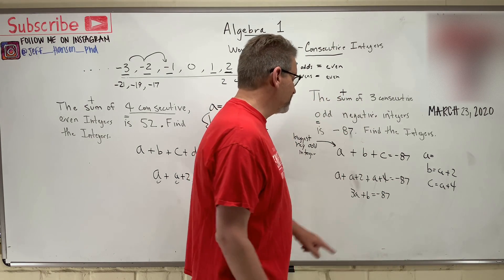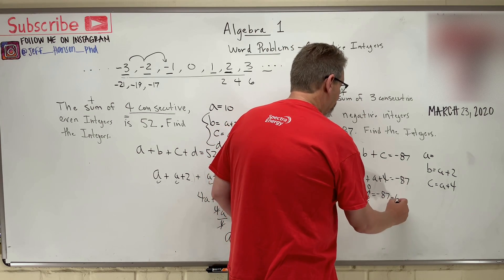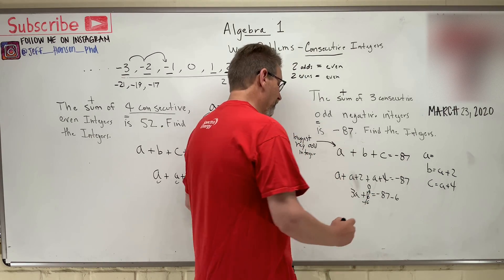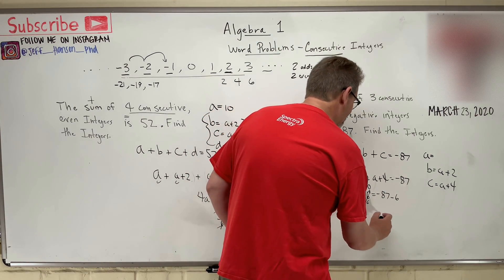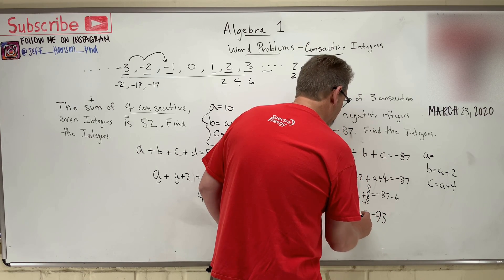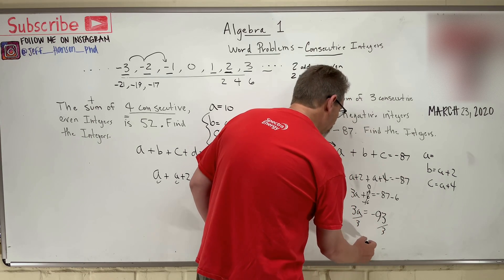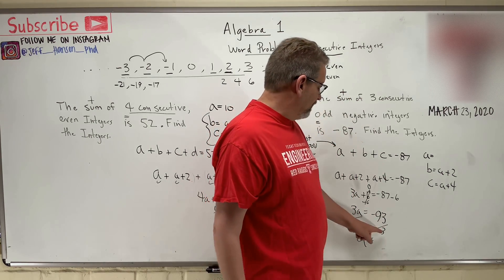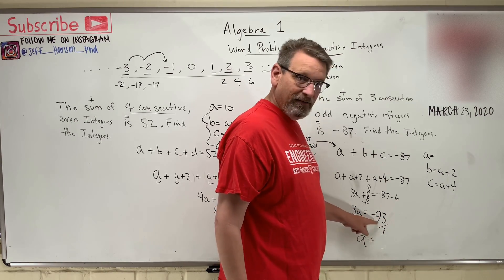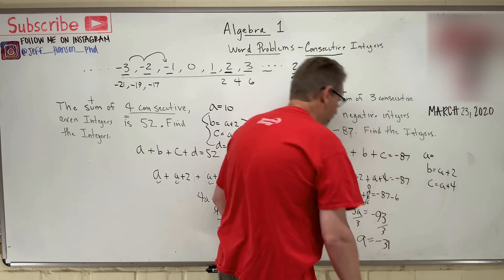So to take the six to the other side, I need to subtract six from both sides, right? And a negative and another negative makes a bigger negative, right? So negative 87 and six more is 93 to the negative equals three A. Divide both sides by three, okay? So A is equal to, let's see, three goes into three one time and three goes into nine three times, so that's negative 31, okay?